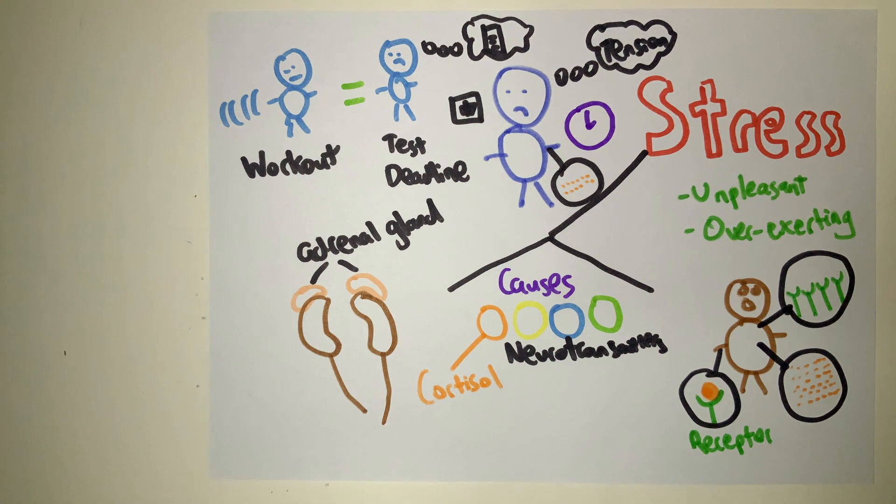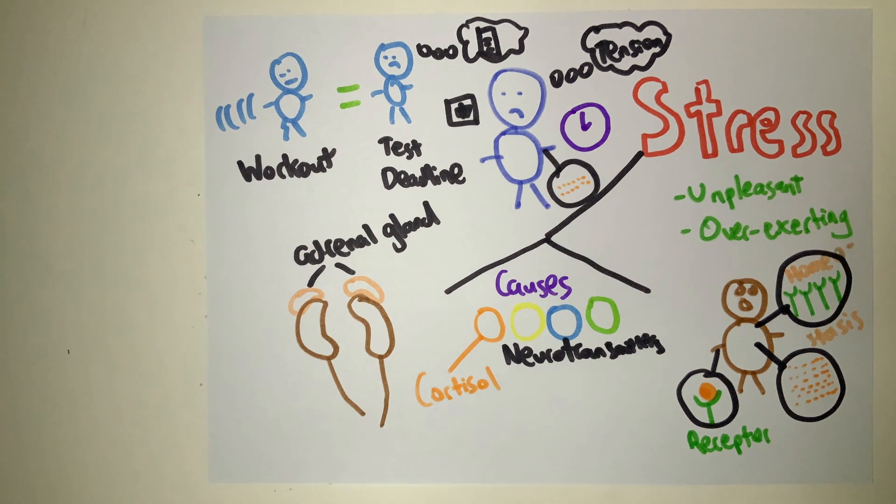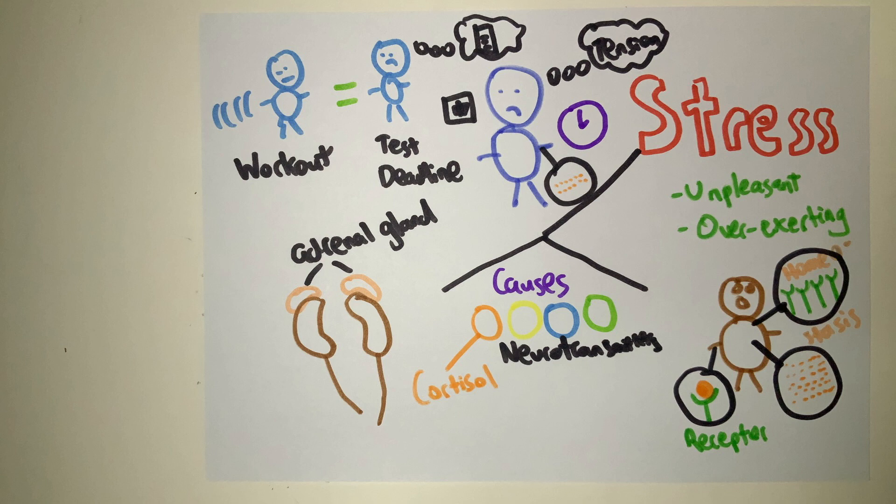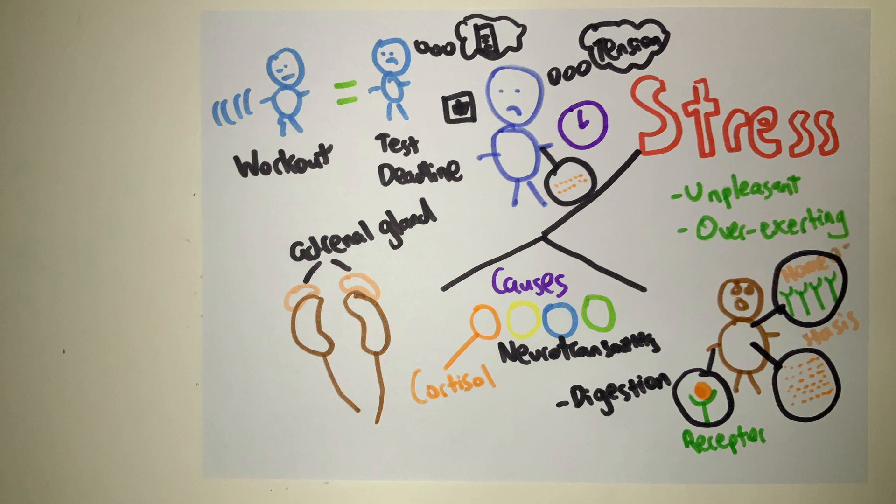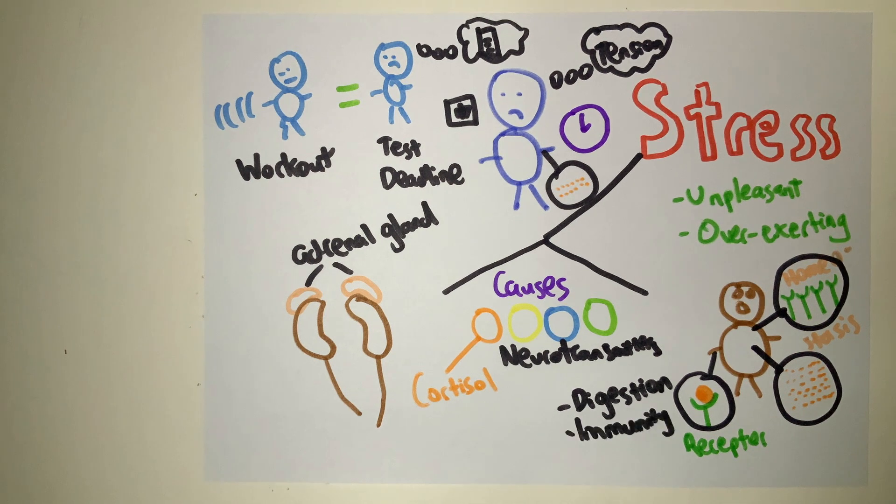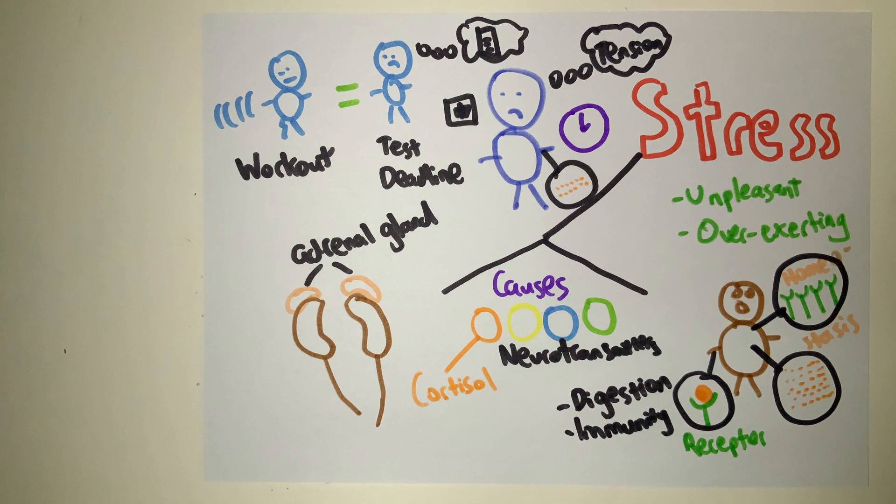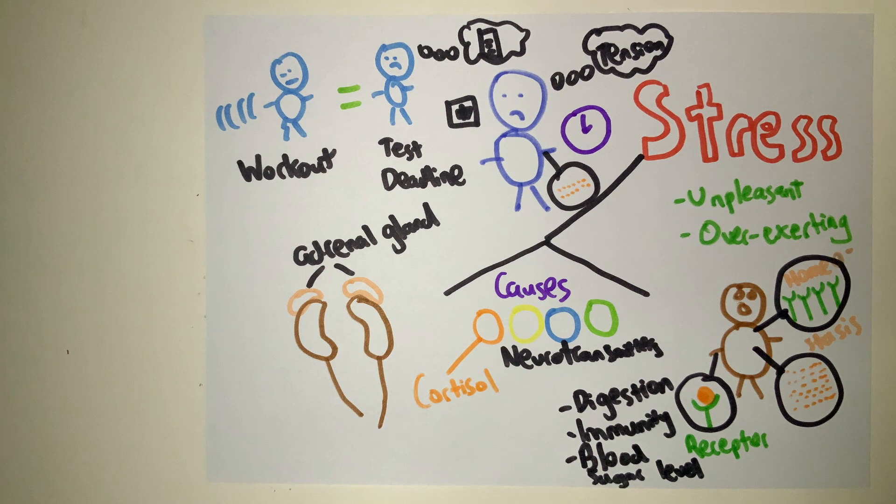Cortisol brings about various changes to the body, including regulation of digestion, reproduction, immunity, and increasing blood sugar levels. In fact, cortisol is one of the body's primary long-term stress hormones.